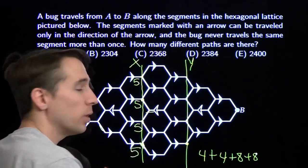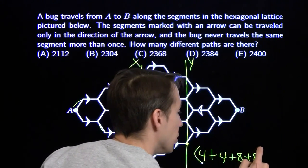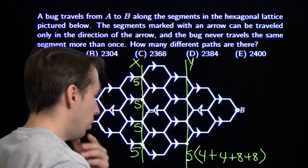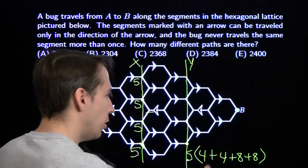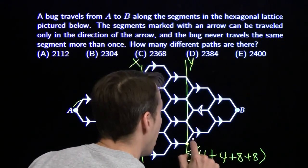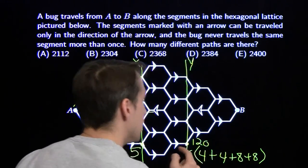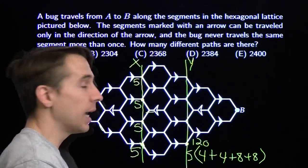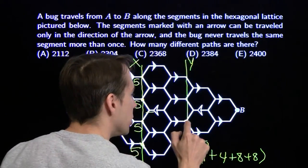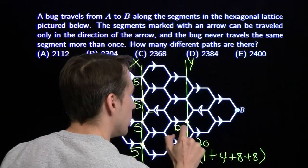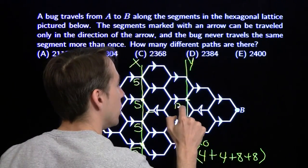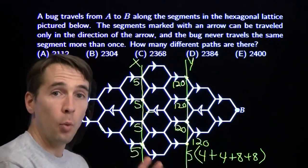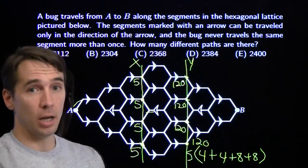There are five ways to reach each point at level X, so the total number of ways is five times the sum of paths from X to Y. The sum is: four plus eight equals twelve, and four plus eight is another twelve, totaling twenty-four. So that's five times twenty-four, which is 120 ways to reach each point at level Y for the first time. The same argument gives 120 for each of the other level Y points.